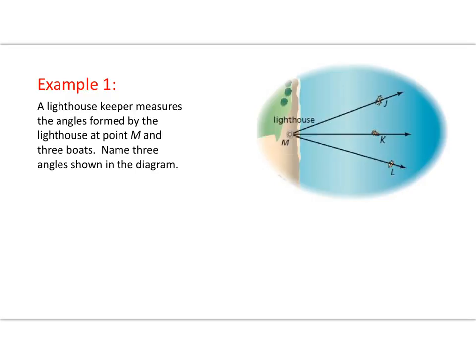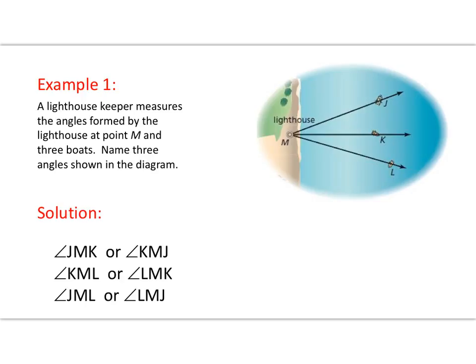Let's practice naming some angles — Example 1. This is not provided in your guided notes, so just add it to the notebook side of your journal, on the left side. Here we have a lighthouse keeper looking out at some boats in the water — this is an aerial view as if you're in a helicopter looking down. We can name angle JMK, or going the other direction, angle KMJ. We've also got angle KML, or LMK. Or the bigger angle, JML, going the other direction, LMJ.